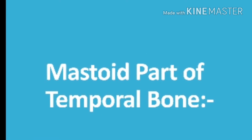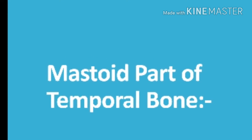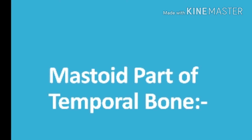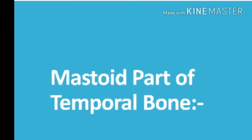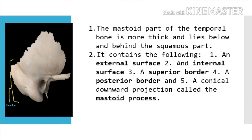This is Temporal Bone Anatomy Part 2. The mastoid part of the temporal bone is more thick and lies below and behind the squamous part of the temporal bone. It contains the following structures: an external surface, an internal surface, a superior border, a posterior border, and a conical downward projection called the mastoid process.